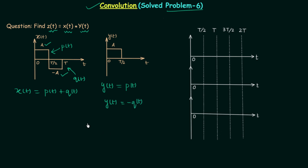We are required to find X(t) convolved with Y(t). We have a shortcut to find the convoluted result when two rectangular pulses are convolved. If the widths of the two rectangular pulses are the same, we get a triangle; when the widths are different, we get a trapezoid. Here, Y(t), P(t), and Q(t) all have the same width, so we will get triangles.